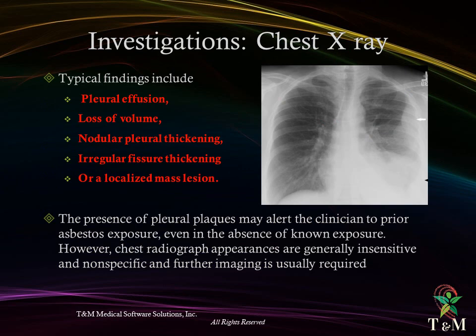Investigations — chest X-ray: typical findings include pleural effusion, loss of volume, nodular pleural thickening, irregular fissure thickening, or a localized mass lesion. The presence of pleural plaques may alert the clinician to prior asbestos exposure, even in the absence of known exposures. However, chest radiography appearances are generally insensitive and nonspecific, and further imaging is usually required.